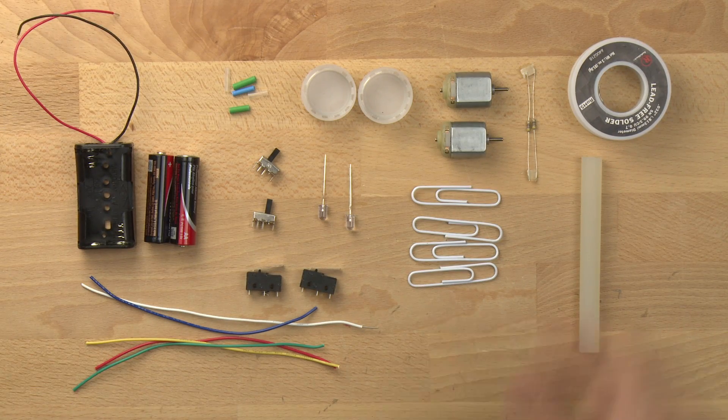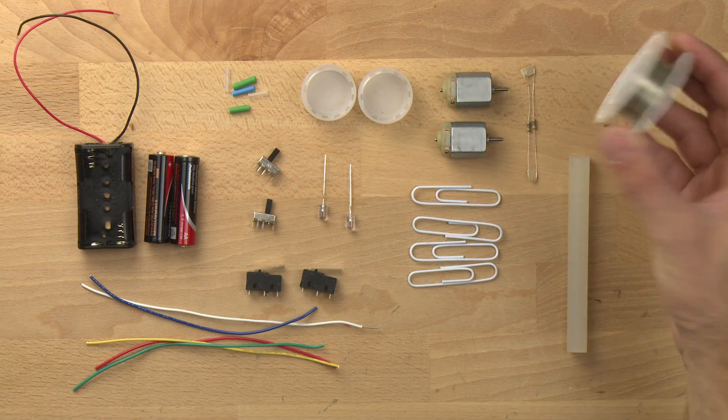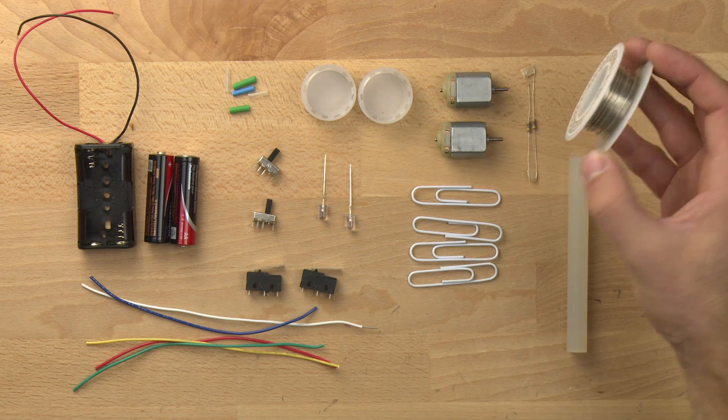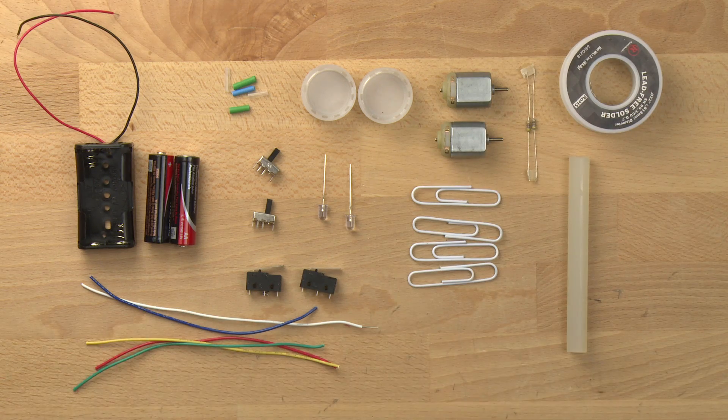These are the parts you're going to need to build your SpoutBot. We've got lead-free solder here. This is going to be used to make metal connections, conduct electricity, and hold our circuit together.